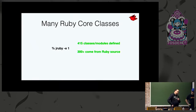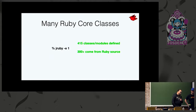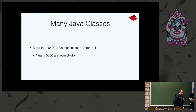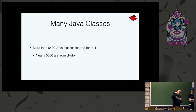For the simplest program — evaluating the fix, number one — we load 415 Ruby classes and modules. Over 300 of those come from Ruby source that we have to parse and then interpret. Going under the covers, we're loading over 6,000 Java types, and 5,000 of those are from JRuby internals: method handles, interpreter instructions, and all of that.